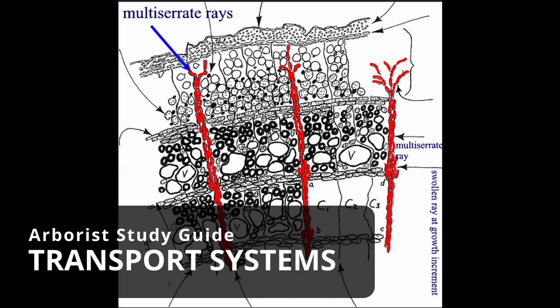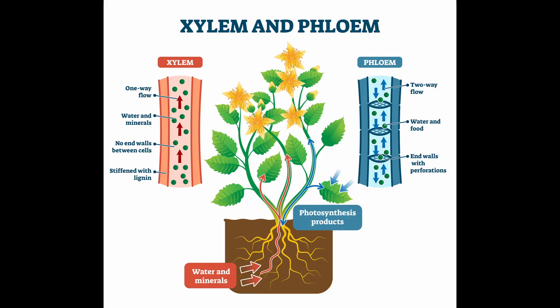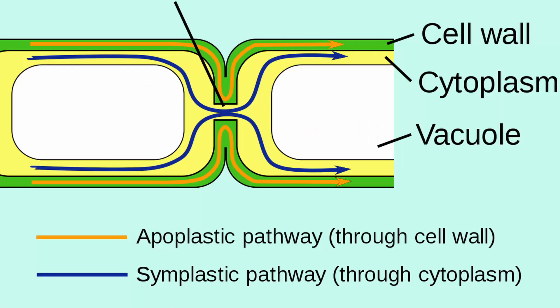This video covers the last couple of terms about transport systems in plants, including what is the difference between the symplasm and apoplasm, as well as the differences between radial and axial transport. The basics of xylem has already been covered in two videos, and basics of phloem in one. Let's start with apoplasm and symplasm.